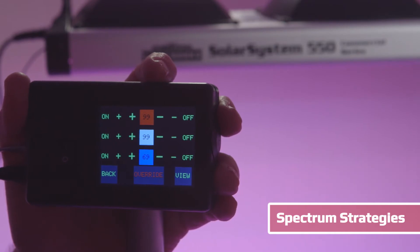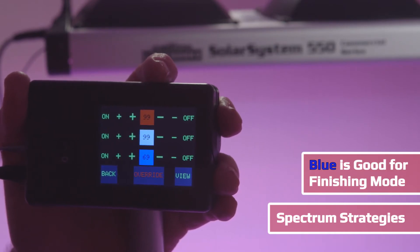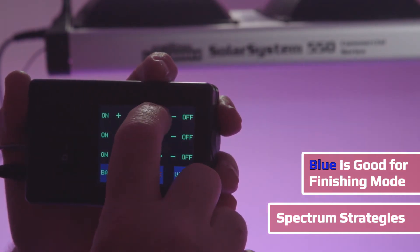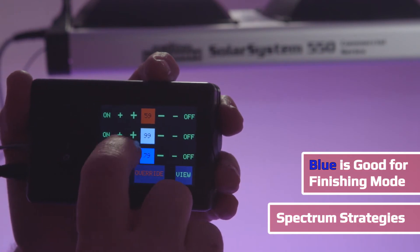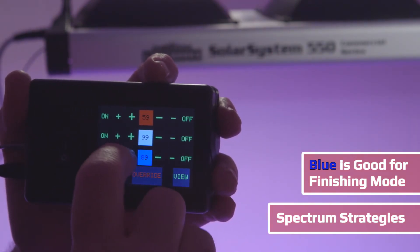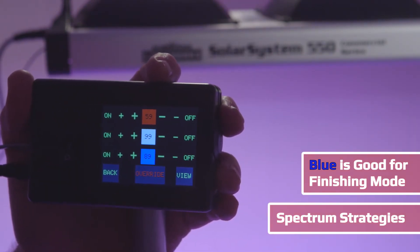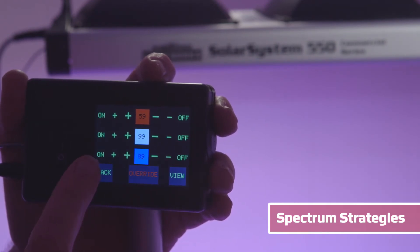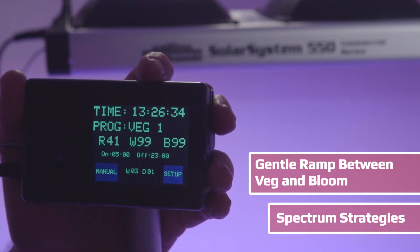However, in your final week or possibly two weeks of flower, when most of your yield is attained, some growers like to back off the level of red in a final finishing mode and push the level of blue back up. This helps develop terpenes, smells, and resin development.